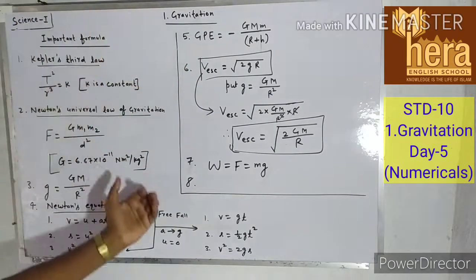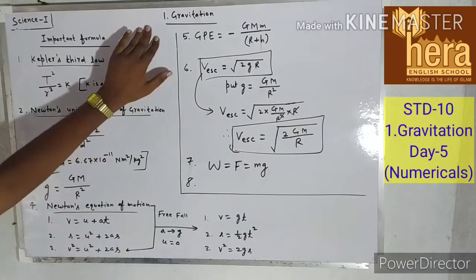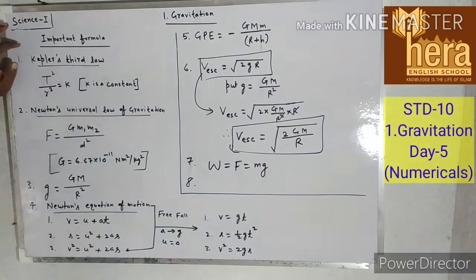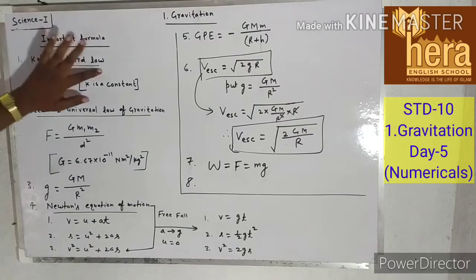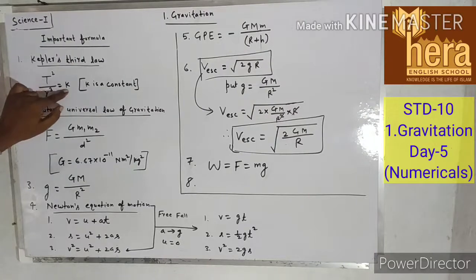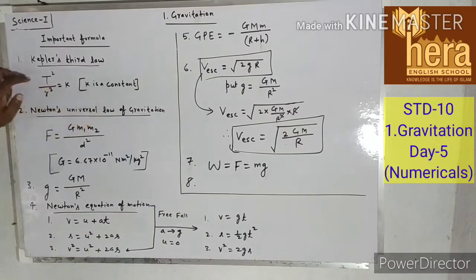The first formula is Kepler's Third Law: T squared upon R cubed is equal to K, where K is a constant. T is the period of revolution and R is the mean distance between the Sun and the planet.